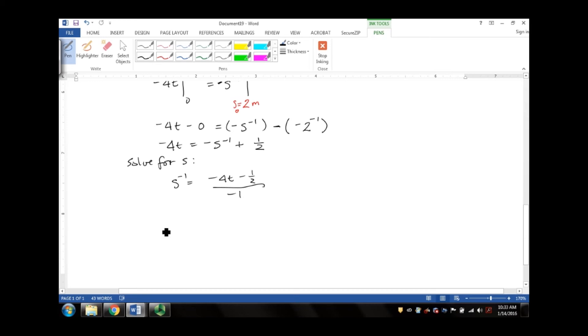Let's rearrange this further and we get 1/s equals 4t plus one half. Simplify this further and we get s equals 1/(4t + 1/2). We can make this look nice by multiplying by 2/2. Then we'll get 2/(8t + 1).